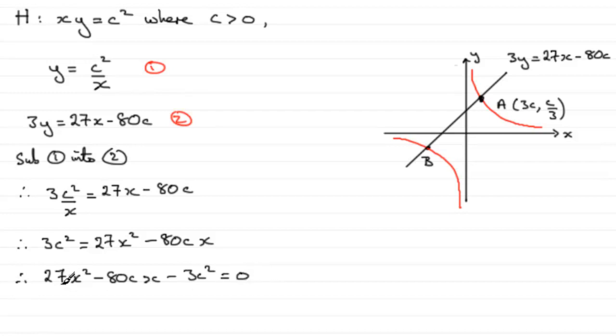And we would want to factorize this. And we've got a few clues here to what the factors are going to be, or what one of them is going to be anyway, because we can see that we know it crosses the curve here at A where X equals 3C.